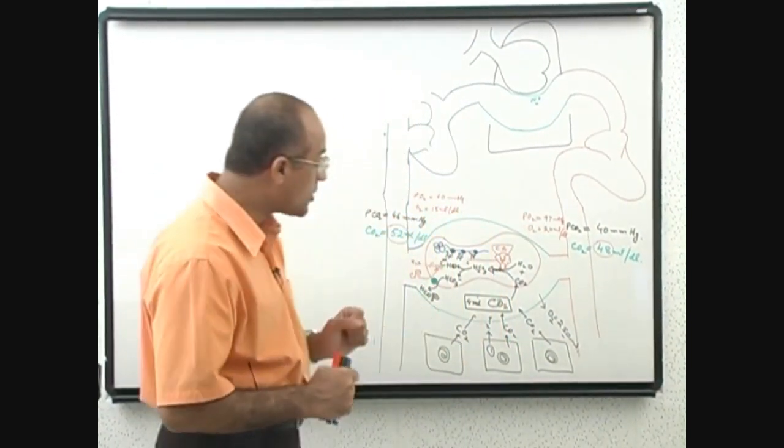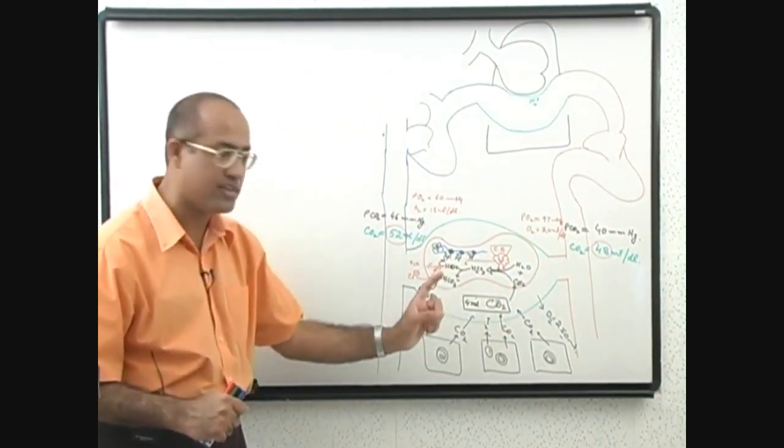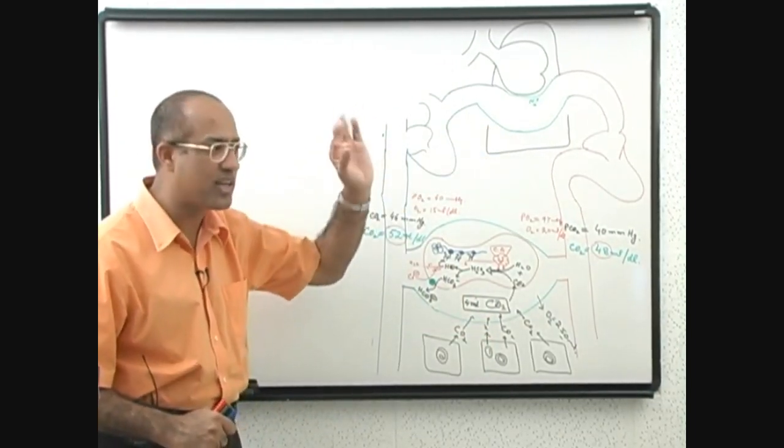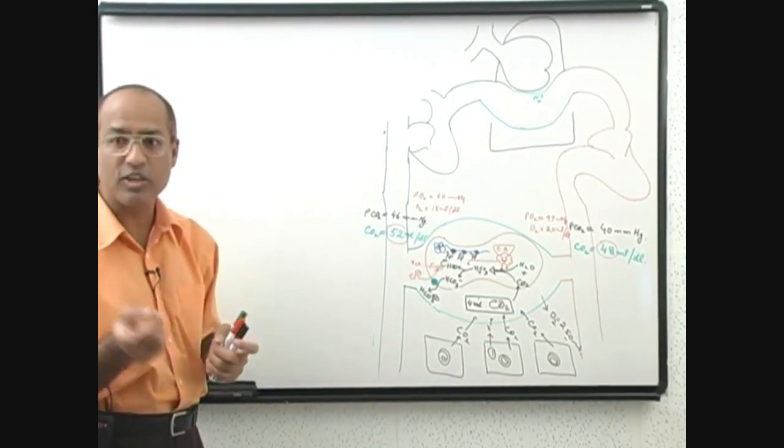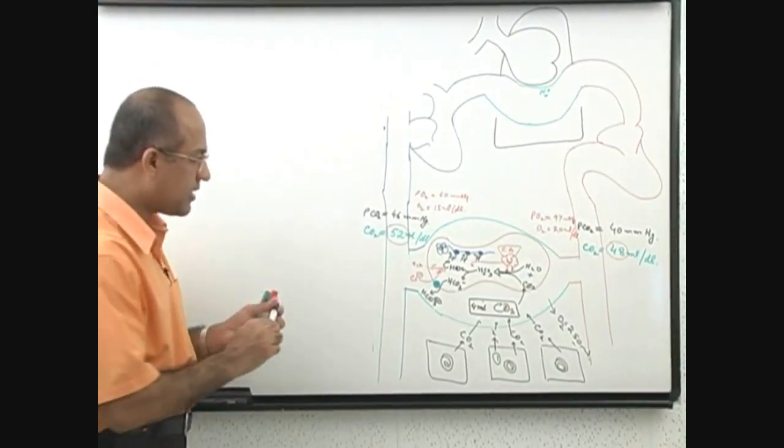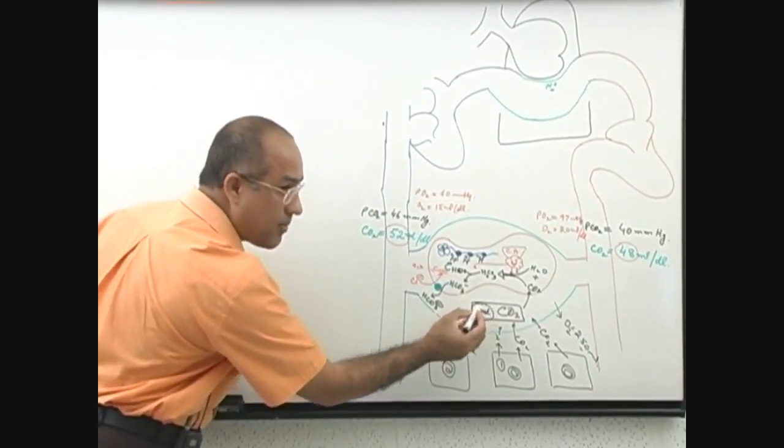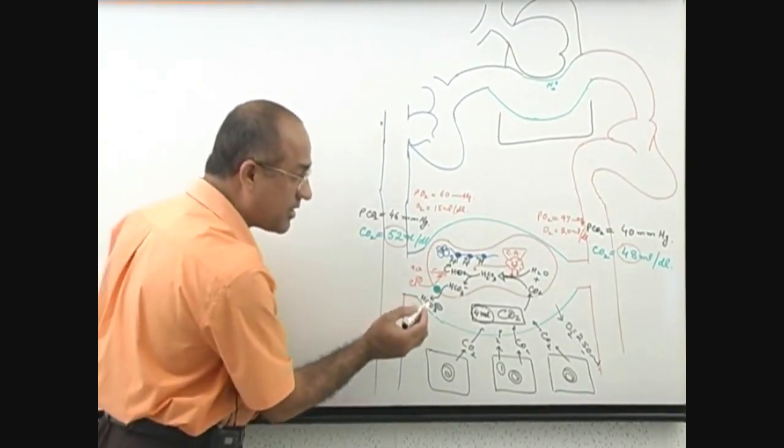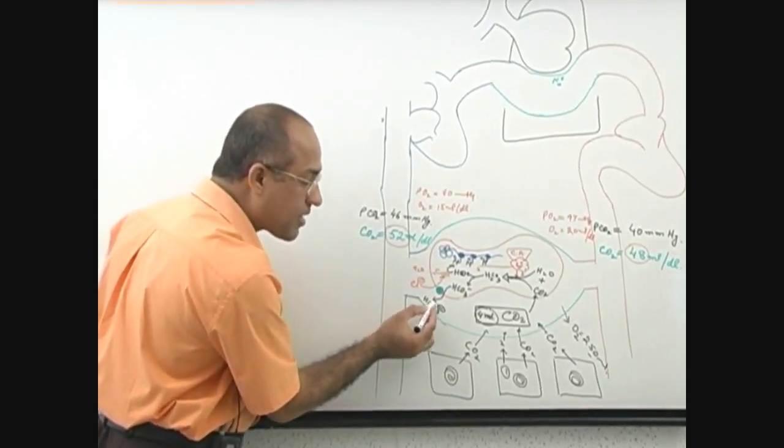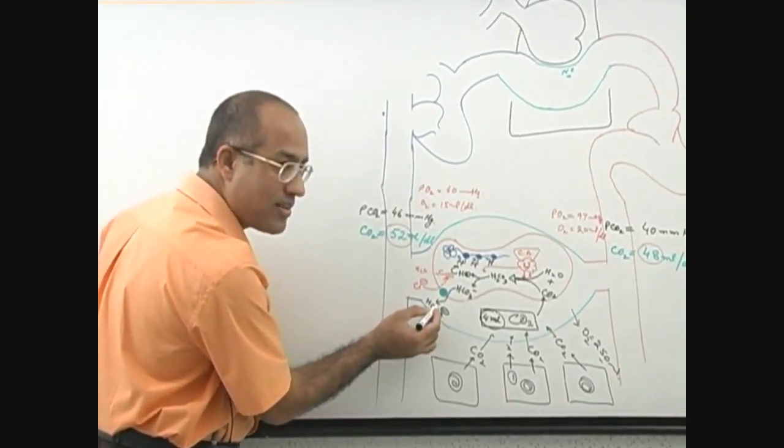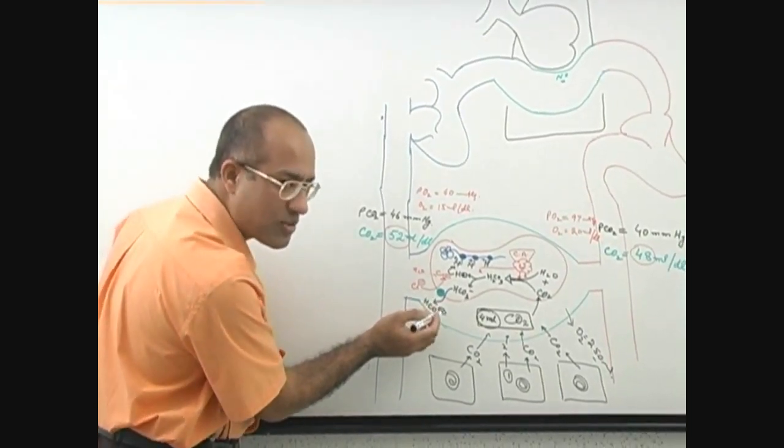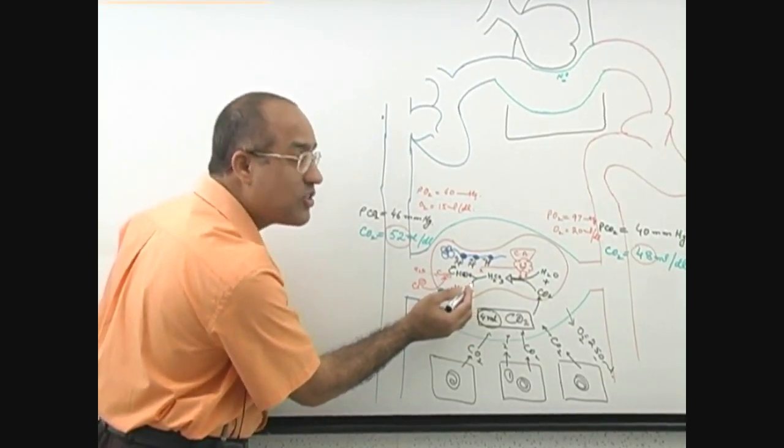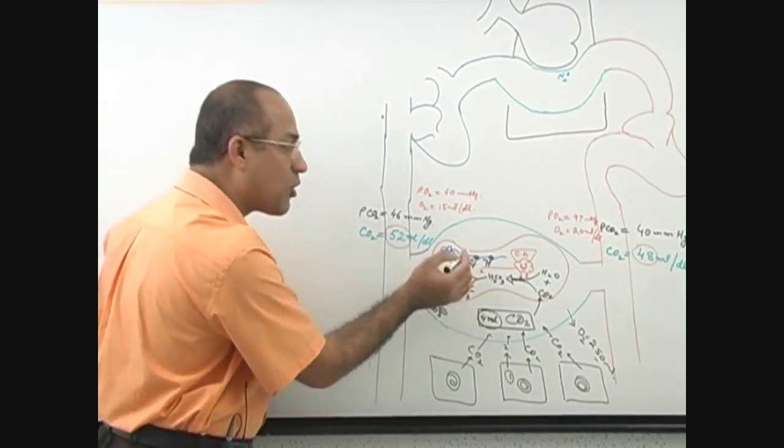If someone asks you how carbon dioxide is transported from the peripheral tissue to the lungs, the major way—90% of the carbon dioxide is transported in the form of bicarbonate. But bicarbonate is in the plasma, but where were they made? In the RBCs. So this is the role of RBCs and this is the role of hemoglobin.